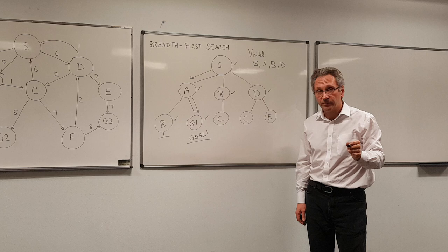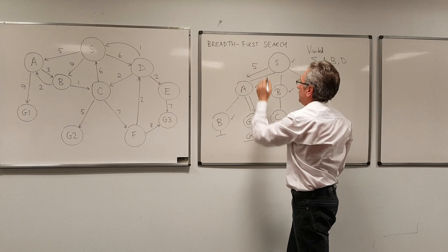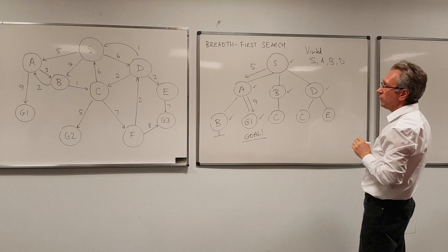Now let's have a little look at the cost of that plan. So S to A in the graph, that costs 5. And A to G1 costs 9. So the total cost of the path is 14.